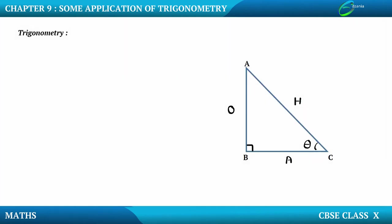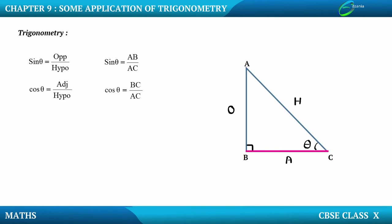Now let us have a recap of the 6 trigonometric ratios. Sin theta is opposite upon hypotenuse, so sin theta equals AB upon AC. Cos theta is adjacent upon hypotenuse, so BC upon AC. Then we have tan theta, opposite upon adjacent, which is AB upon BC.